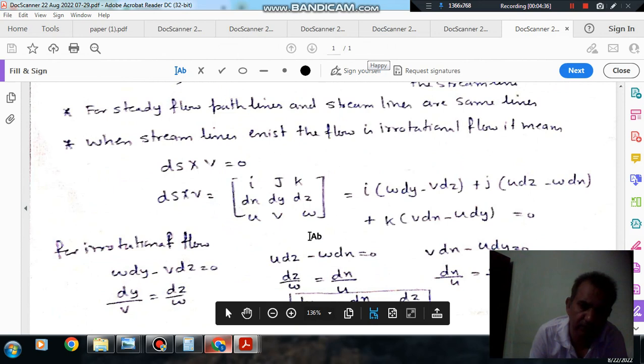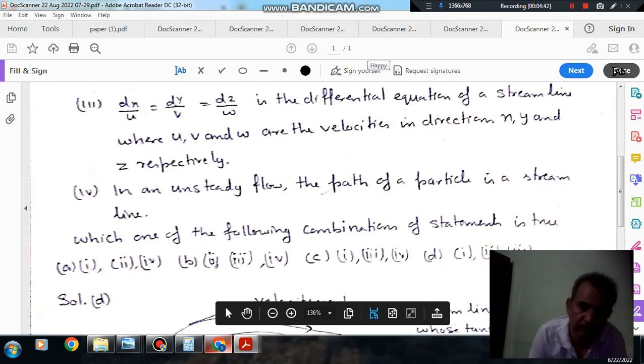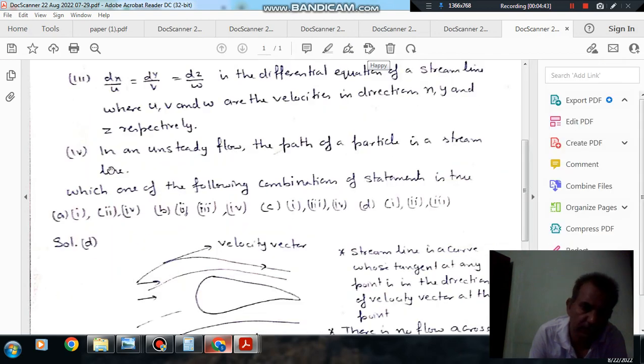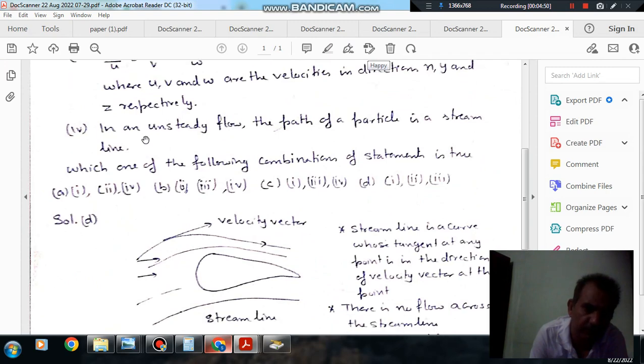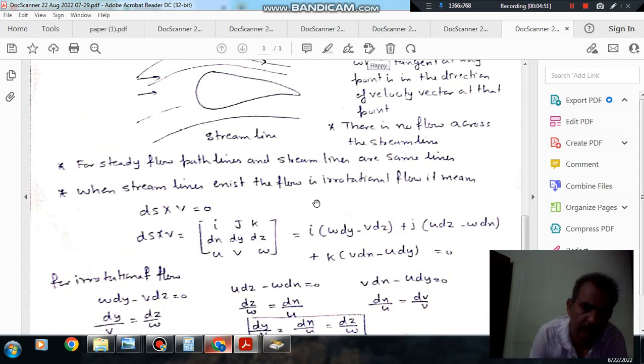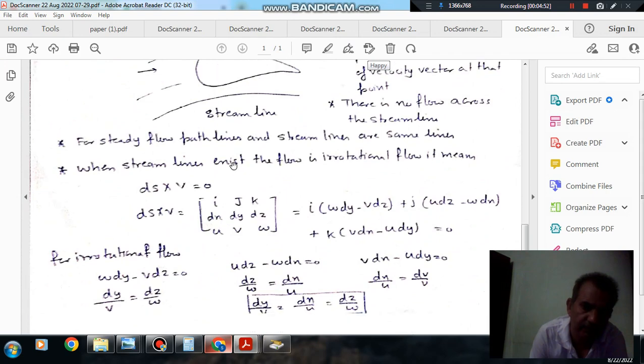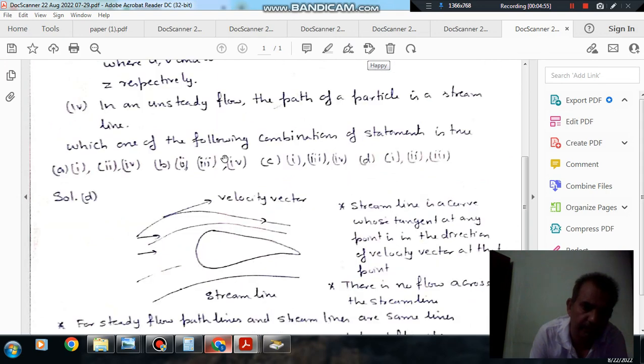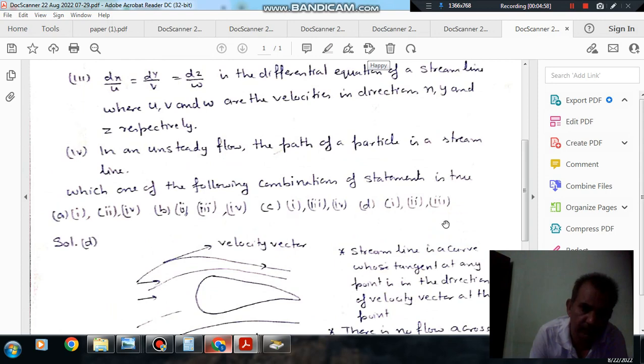So, this condition should be satisfied. Fourth condition is: in an unsteady flow, path of the particle is a streamline. That is correct. In a steady flow, path lines and streamlines are same. So, answer is 1, 2 and 3. Option d is the right answer.